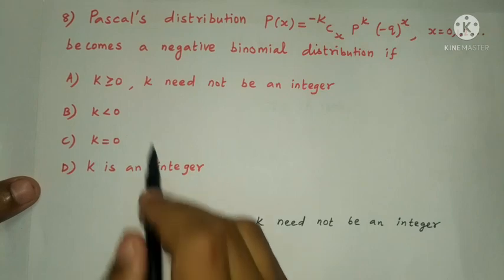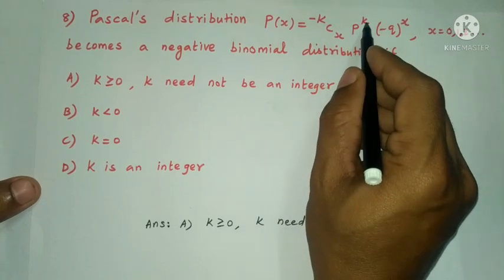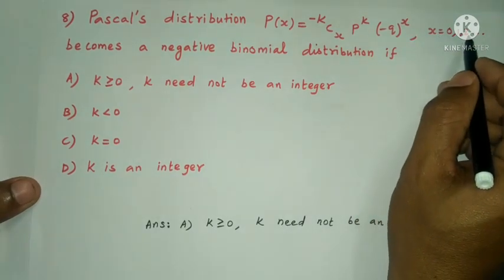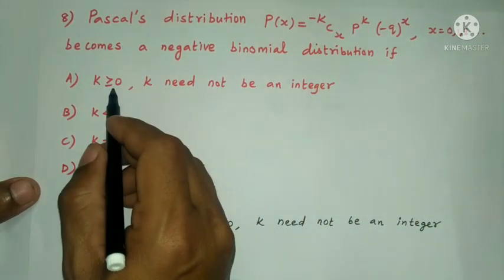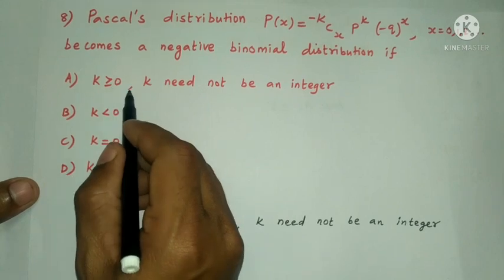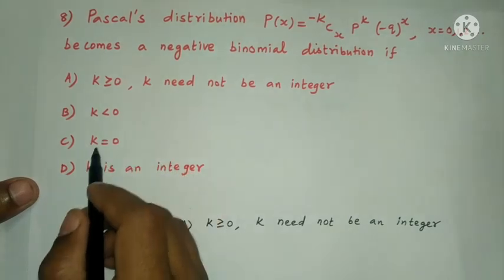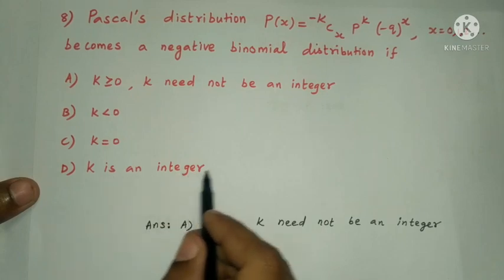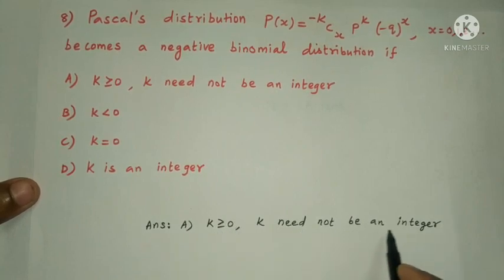Next question: in Pascal's distribution, P(x) = (−k C x) × p^k × (−q)^x, where x = 0, 1, 2, 3, etc. This becomes a negative binomial distribution if — Option A: k > 0 and k may not be an integer. Option B: k < 0. Option C: k = 0. Option D: k is an integer. The answer is option A: k is greater than 0 and k may not be an integer.